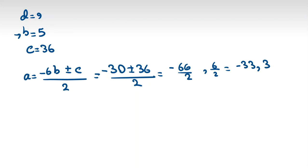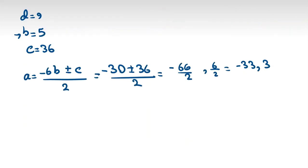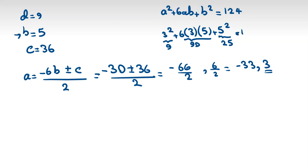Okay, so we found a with these two answers. So let's check. a squared plus 6ab plus b squared equals 124. So let's check. First one: a is 3. Let's check this one: 3 squared plus 6ab - 3 times 5 plus 5 squared. So it will be 30 times 3 is 90, 3 squared is 9, 25 plus 25 - this will be 9 plus 90 plus 25, which is 124. It works.